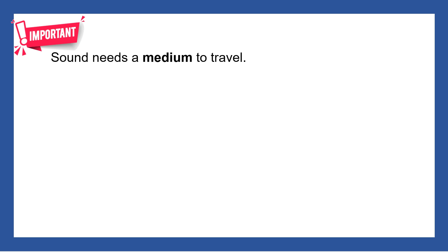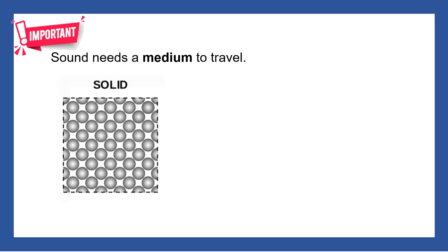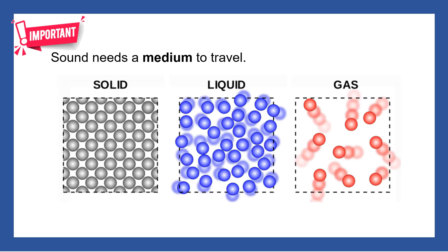In our previous lesson we learned that sound needs a medium to travel, and when we say medium, this can be solid, liquid, or gas. In solid, the particles are very close together. In liquid, they are not too far yet not too close, and the particles can slide past one another. In gas, they are very far apart from each other.